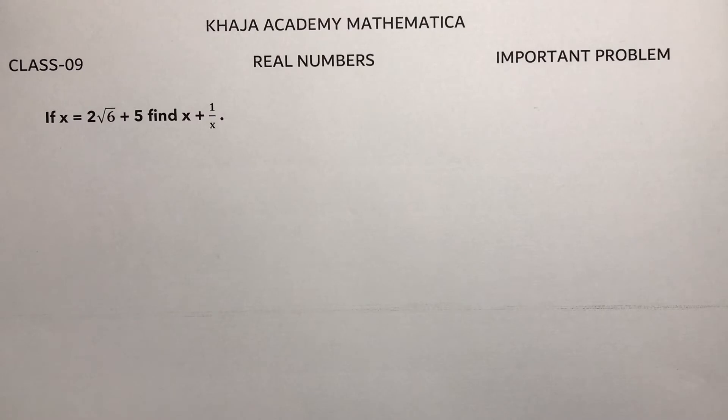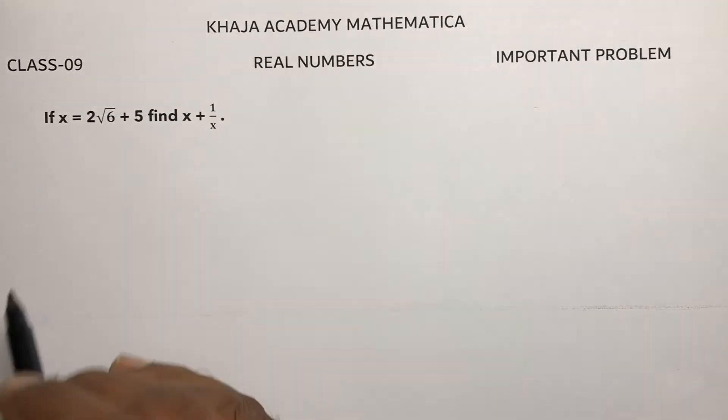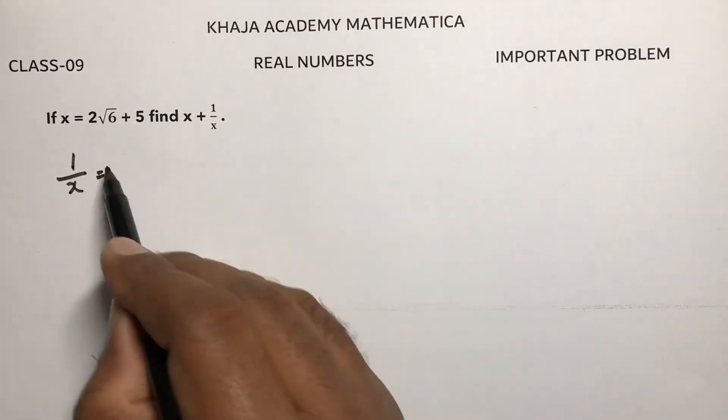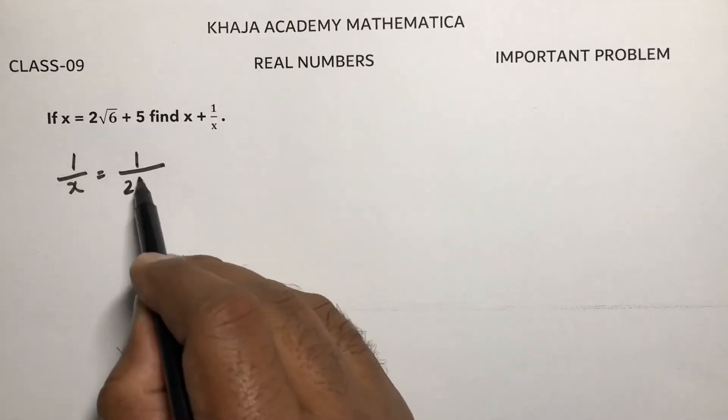Class 9 important problem from real numbers. If x equals 2 root 6 plus 5, find x plus 1 by x. So when you find a question like this, x plus 1 by x and they give the value of x, first my advice is calculate 1 by x. 1 by x is 1 by 2 root 6 plus 5.